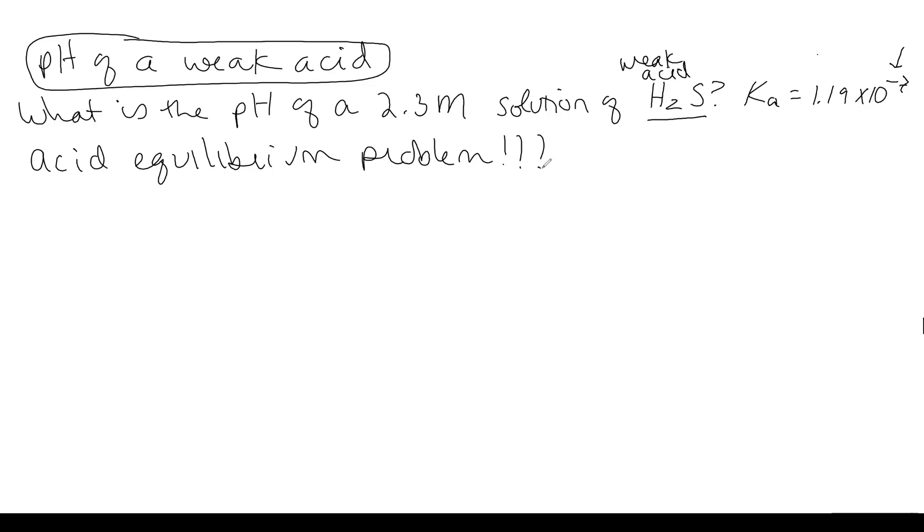So what you actually need to do is begin by writing out the equation of your acid in water. So here is that equilibrium. So what we've done is we've dissolved our acid in water, hydrogen sulfide, and we end up with hydronium because it's a weak acid. And then we end up with the conjugate base.